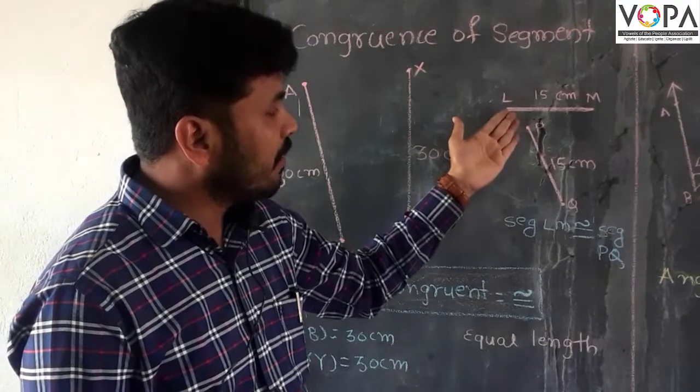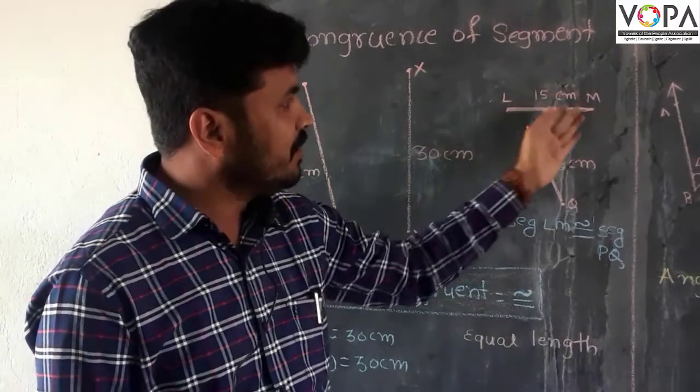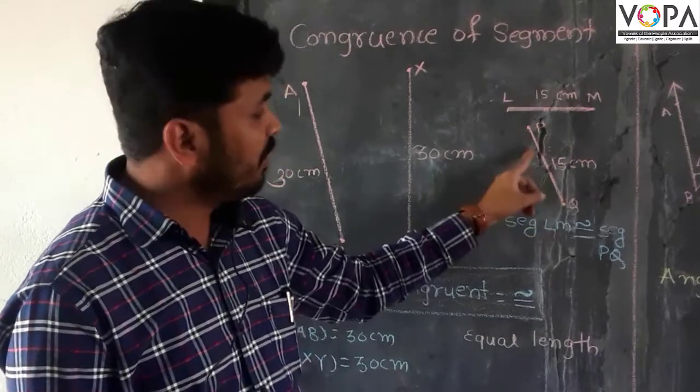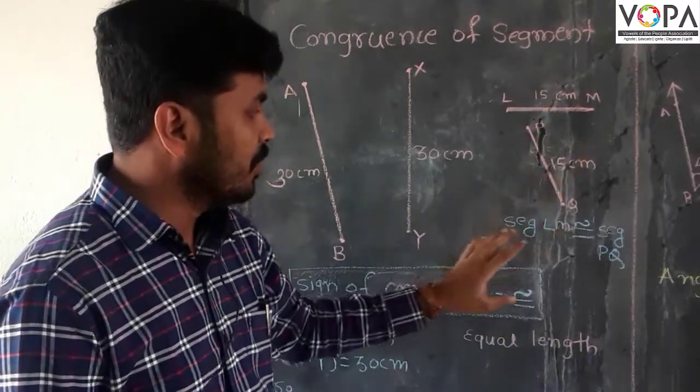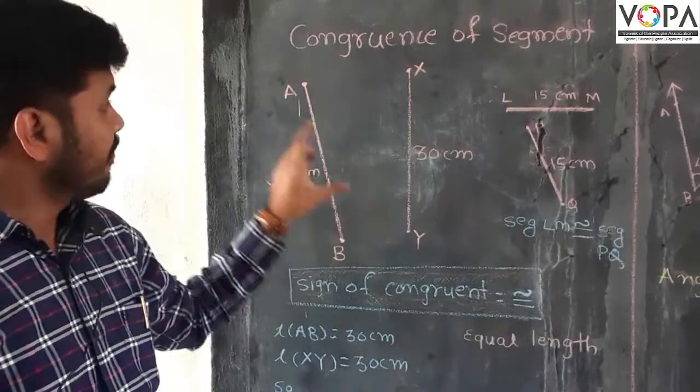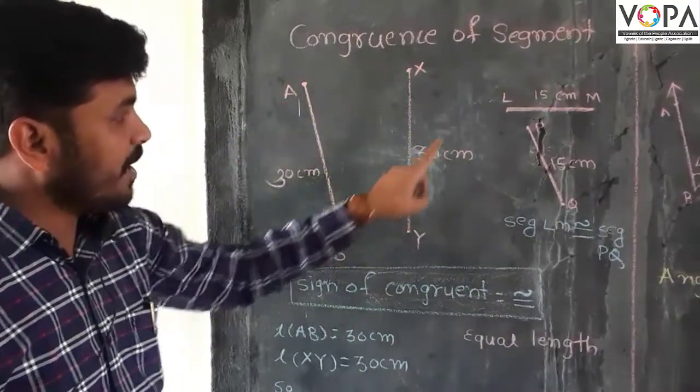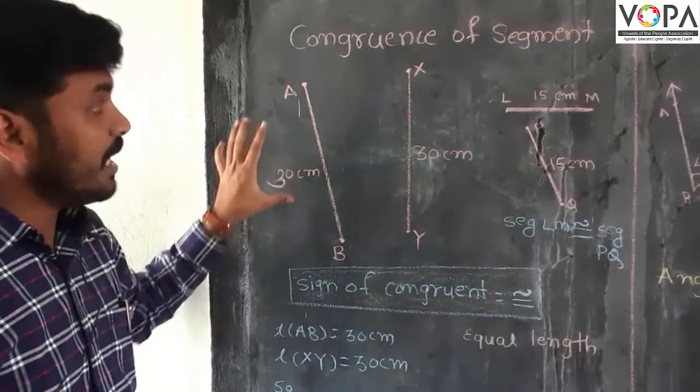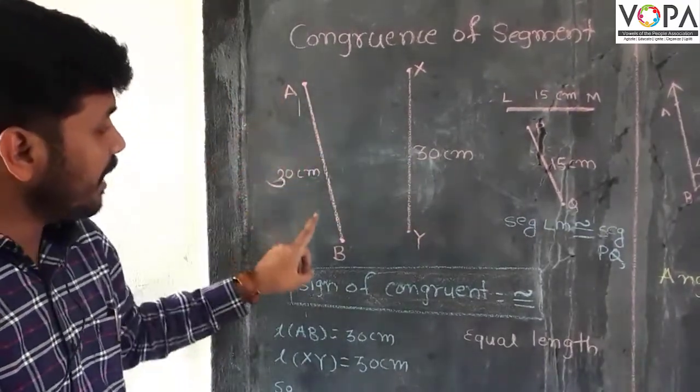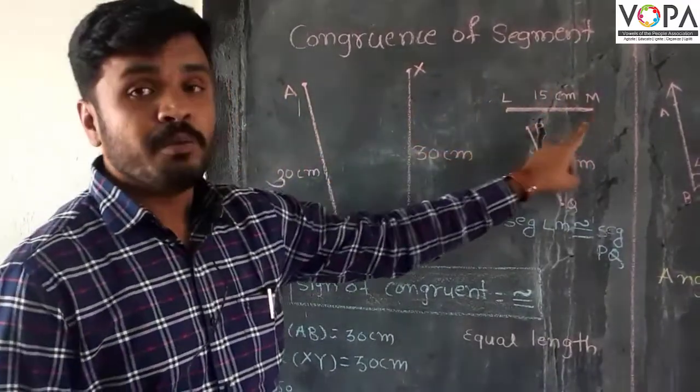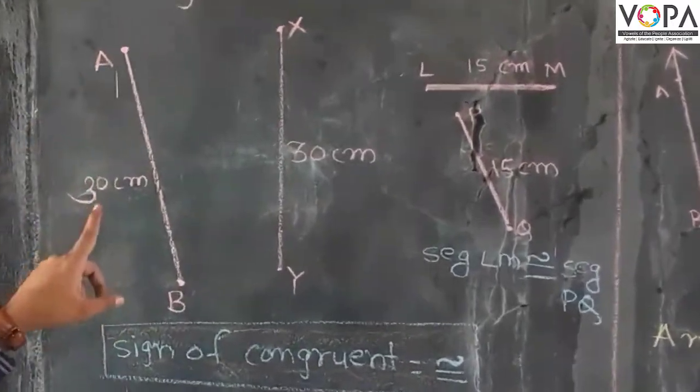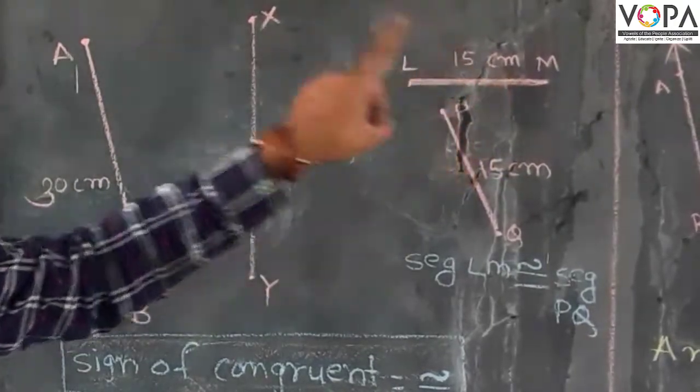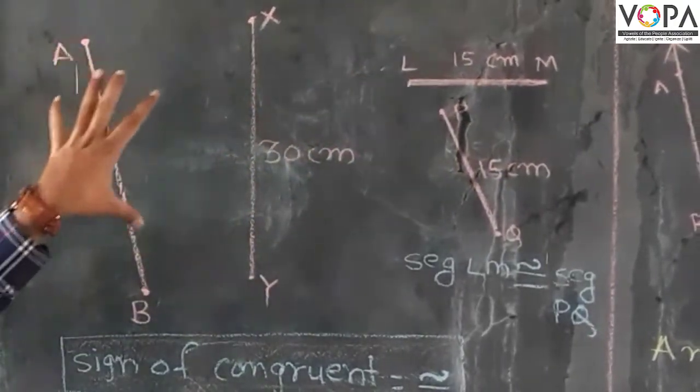Here is again one figure where the measurement of segment LM is equal to 15 centimeters and the length of segment PQ is 15 centimeters. So these are the segments: segment AB, segment XY, segment LM, and segment PQ. Segment AB is not equal to segment LM because the length of segment AB is 30 centimeters and segment LM is equal to 15 centimeters, so these segments are not equal.